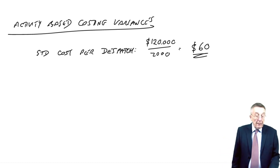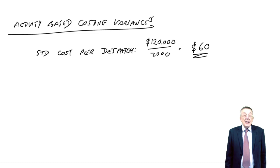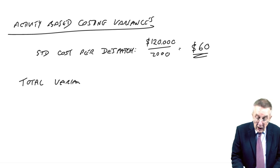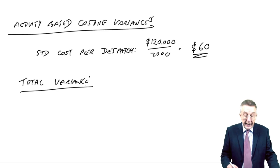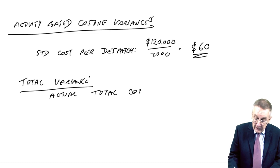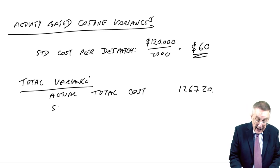We've got the budget there. We're told what actually happens. Actual production 50,400. There were actually 2,200 dispatches. I'm not surprised there are more, because there are more units. And we're told what the total overhead cost is. So, let's look at variances. First of all, let's look at the total variance.